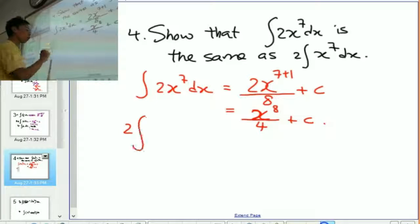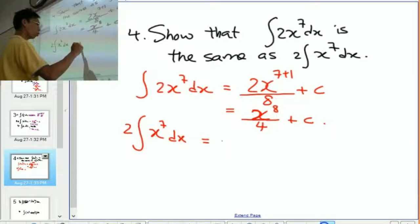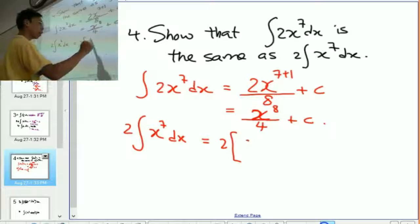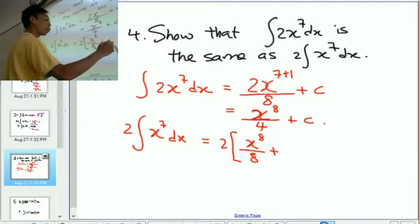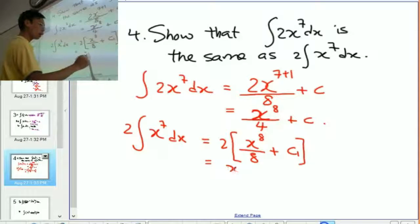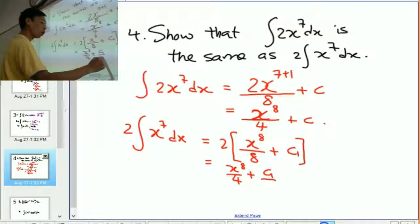The second part is this. 2 times the integration of x to the power of 7 dx. So this is going to be 2, bracket, x raised to the power of 8 divided by 8 plus I'm going to have c1, for example. So this is going to be x to the power of 8 over 4 plus c1 over 2.